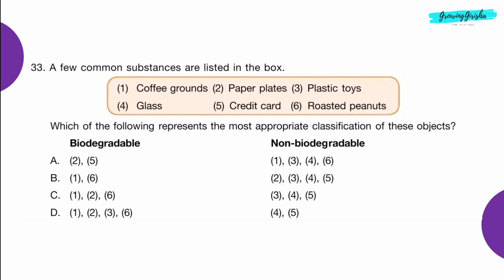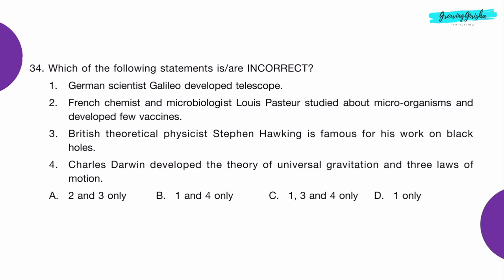Question 33: A few common substances are listed in the box. Which of the following represents the most appropriate classification of these objects? Option C: One, two, and six.